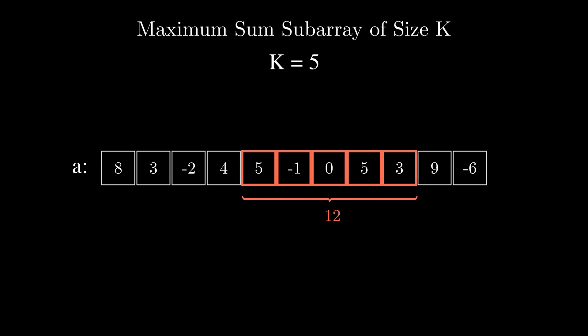This problem can be solved in many different ways and one of the approaches that might come to mind is to iterate over all the endpoints of the subarrays starting from k up to the very end of the array and compute the sum of each of those subarrays and finally extract the maximum out of those.